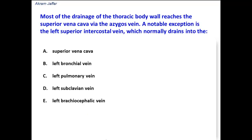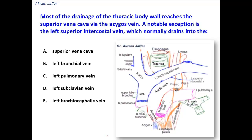Most of the drainage of the thoracic body wall reaches the superior vena cava via the azygous vein. A notable exception is the left superior intercostal vein. Where is the drainage of the left superior intercostal vein? The left superior intercostal vein is the vein that drains the second and third, sometimes the fourth, left posterior intercostal spaces.